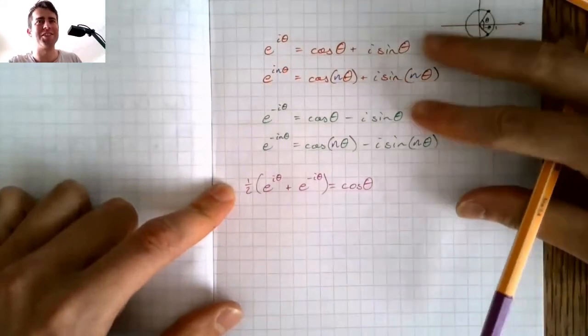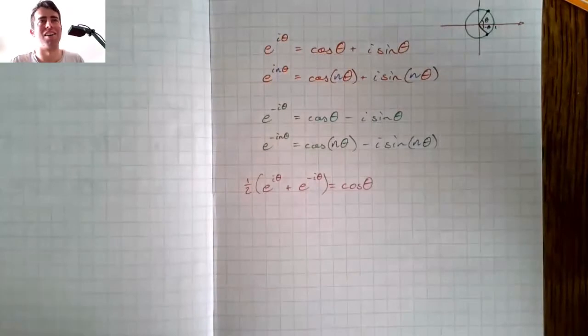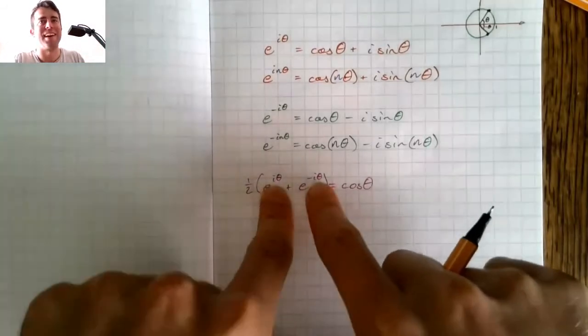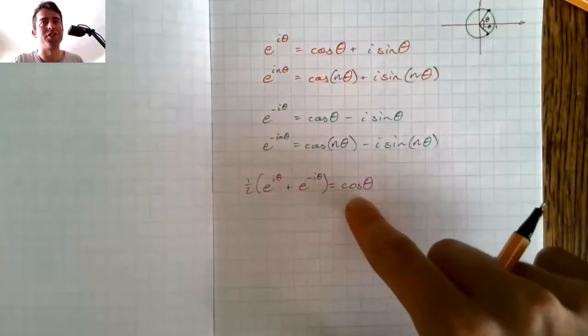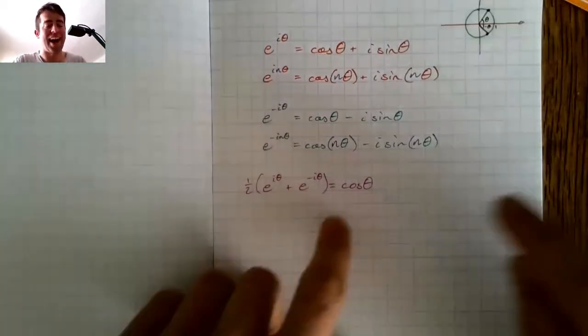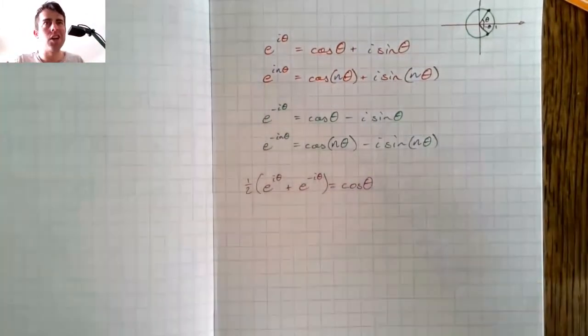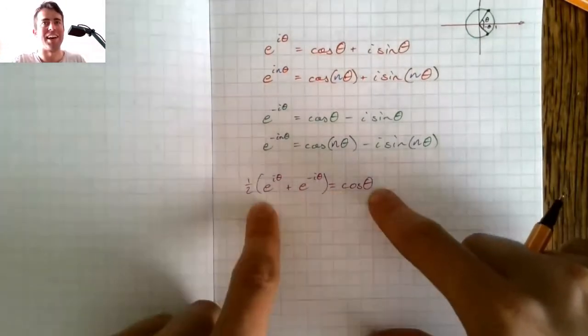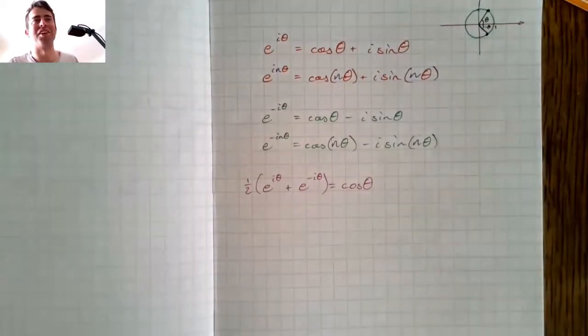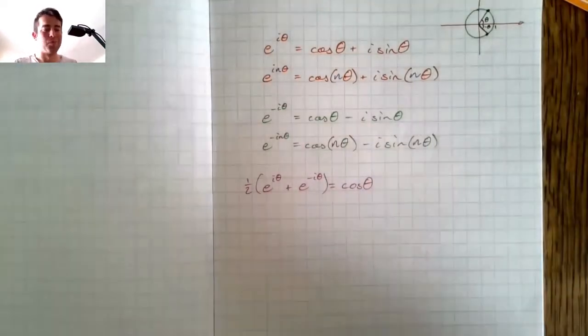Now, we've just gotten to that by adding these two together, but this expression that we've just written down is remarkable. We have an expression with e's in it, imaginary numbers in it, and it equals cos of theta. That cos of theta that you learnt about way back when as a ratio of sides of a right-angled triangle. This has nothing to do with triangles. We've now got it defined as e's and imaginary numbers. Did you think when you first learnt about cos that it was going to end up being that? Probably not.